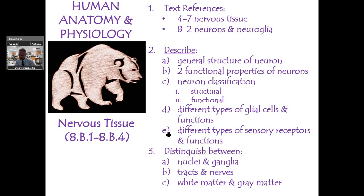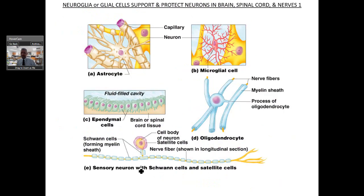Let's talk about the support cells, which we call glia cells or neuroglia cells. There are six distinct cells that are not neurons but are support cells — they're called neuroglia cells.